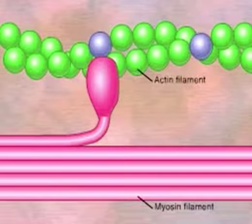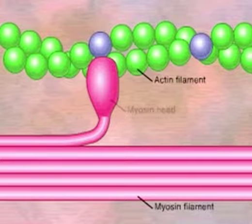A myosin filament has many myosin proteins packed together, and each myosin protein has a globular head region that protrudes from the filament.